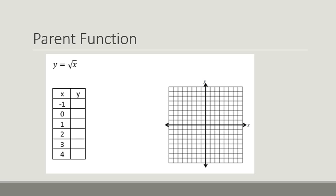So here's our parent function, y equals the square root of x. If we go ahead and sub in our x values, we're going to get the square root of negative 1, which is not a real number.